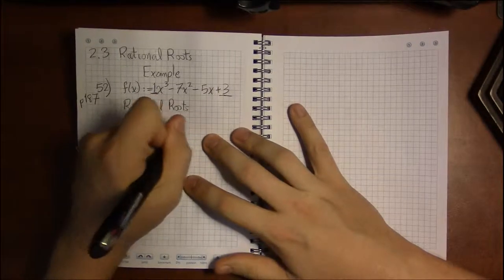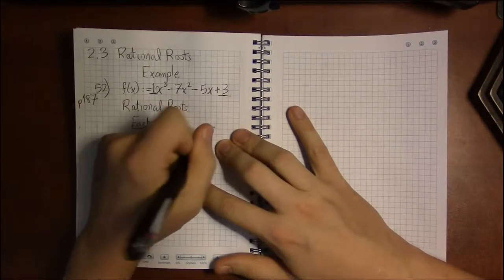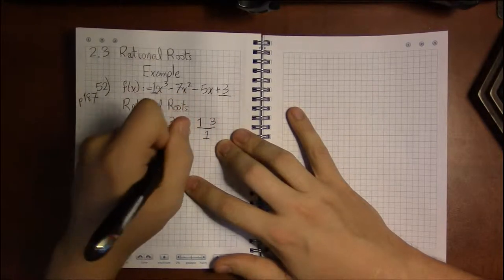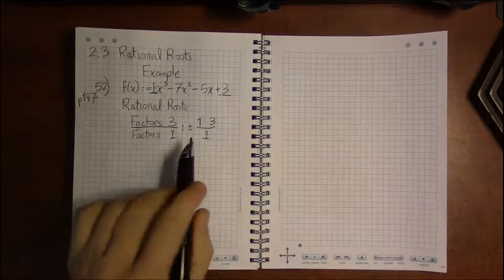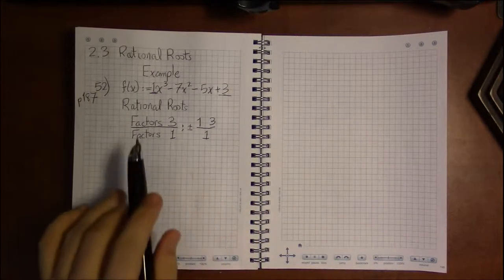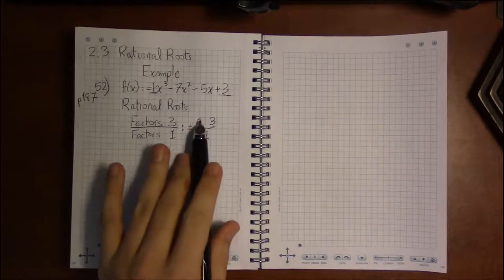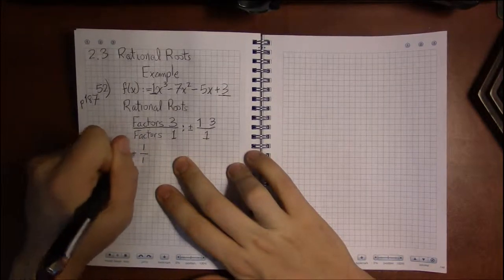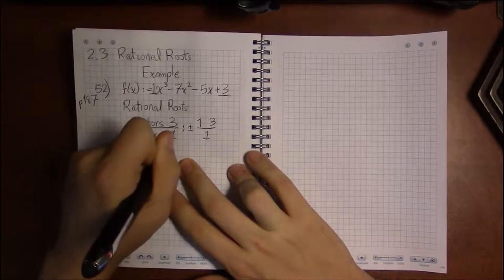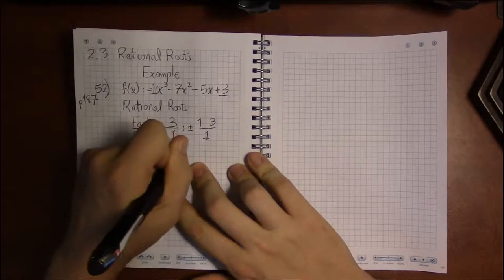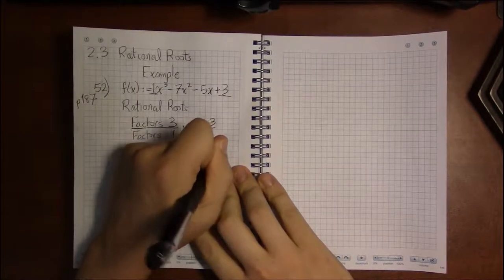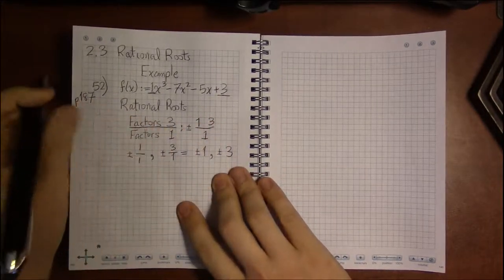Well, that's fairly easy. The factors of 1 is just 1 in itself, and with 3, it's 1 and 3. So, listing out all the possible rational roots is very easy. It's just plus or minus 1 over 1, and plus or minus 3 over 1. In other words, plus or minus 1, and plus or minus 3.